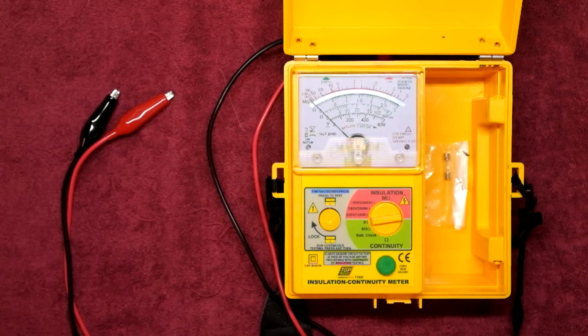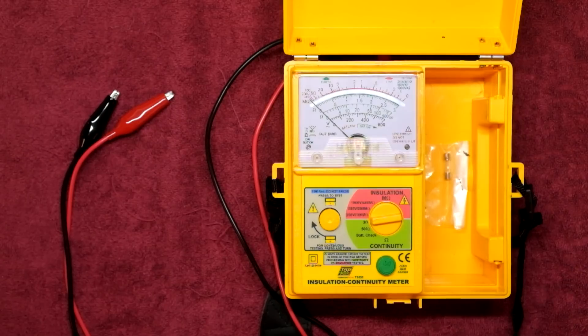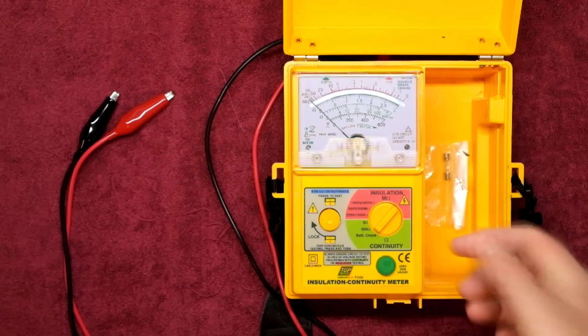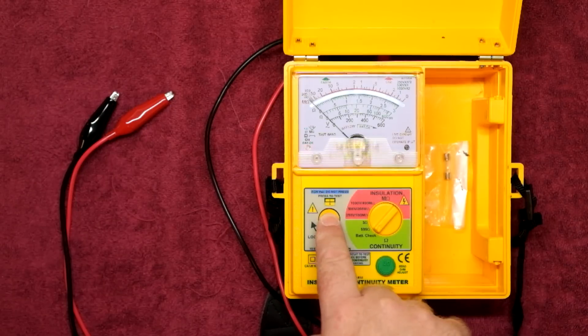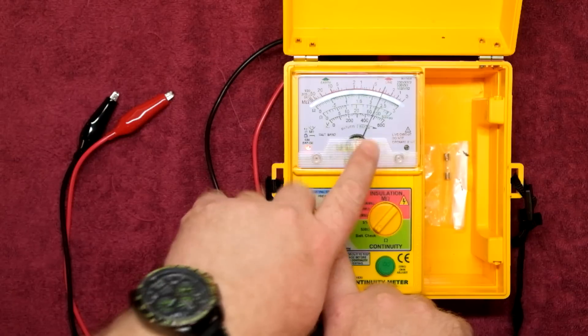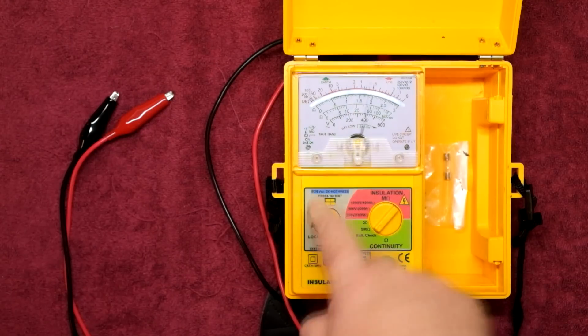So the meter pretty much does what it says. It's an analog insulation resistance tester and continuity tester. Let's just start with the battery test. If you hit the test button, the battery test goes over to the green area at the bottom over here on the scale which means battery good. We're happy with that.